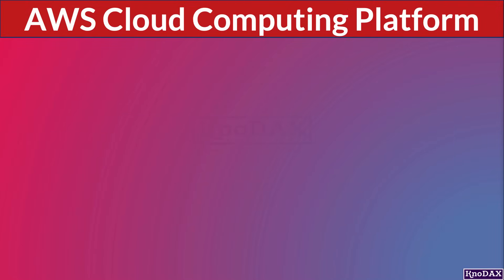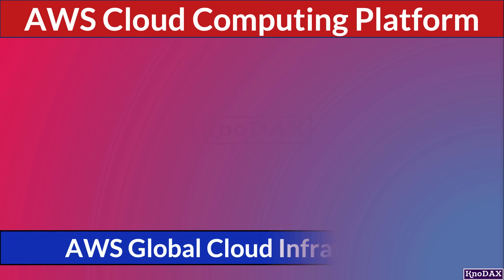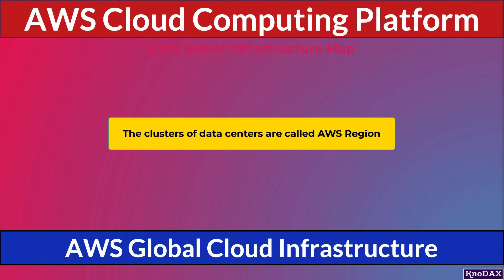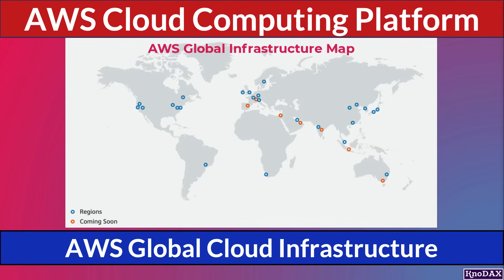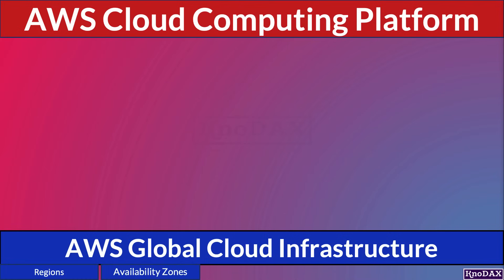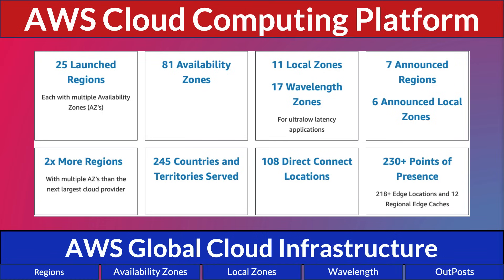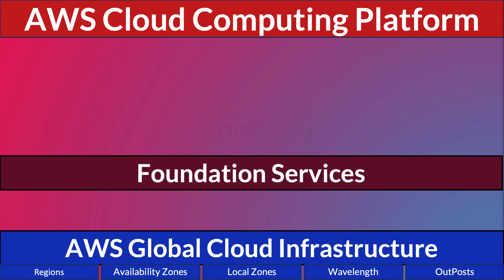Let's start with AWS's global cloud infrastructure, which is its core foundation. AWS has data centers in multiple locations all over the world. The data center clusters are called AWS Regions, and a single cluster of data centers is known as an Availability Zone. In addition to availability zones, AWS's global cloud infrastructure has the concept of local zones, wavelength, and outposts.